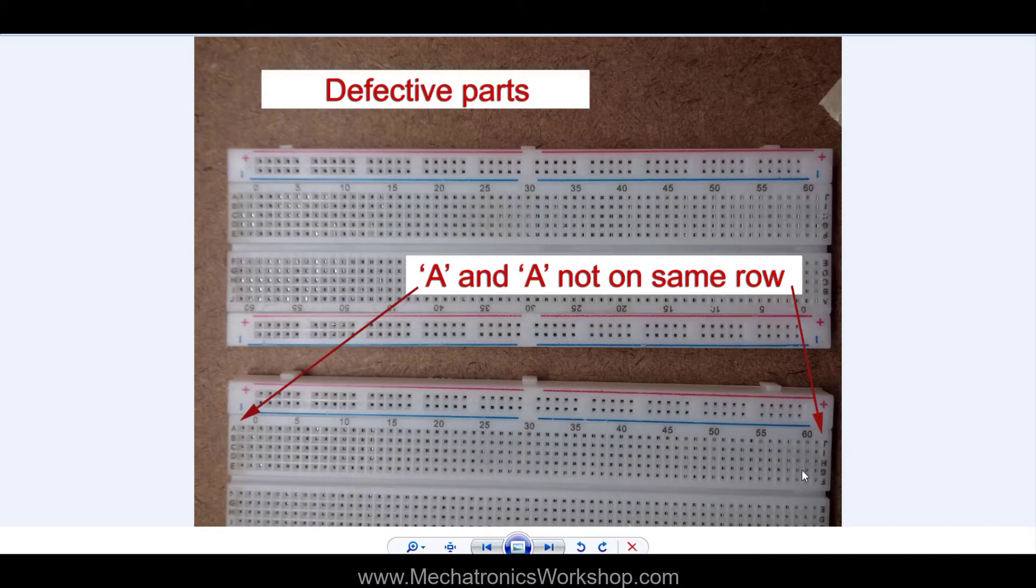So those don't line up properly. So there's another indicator that you got a bad board. If you've got these misaligned letters - so misaligned letters, misaligned numbers, and then bad printing. Look at the rough printing here.